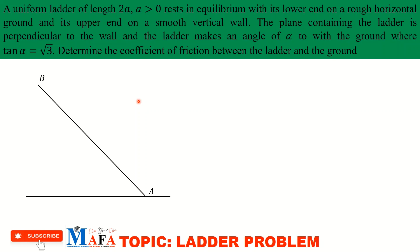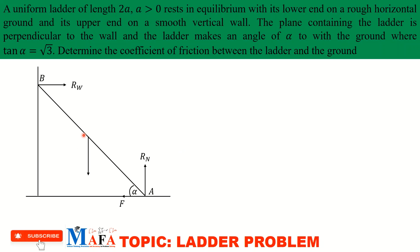Now let's indicate the various forces acting on this ladder. We have the reaction force at the wall, between the ladder and the wall — we call it R_w. We also have the normal reaction at the ground — we call it R_n. There is also the frictional force F at the ground, and the angle alpha between the ladder and the ground.